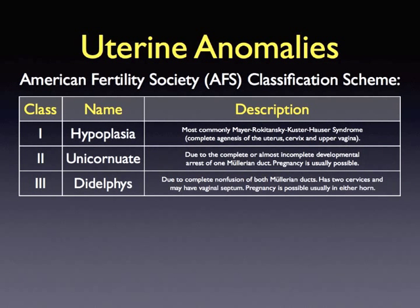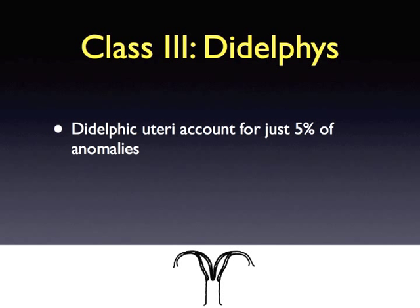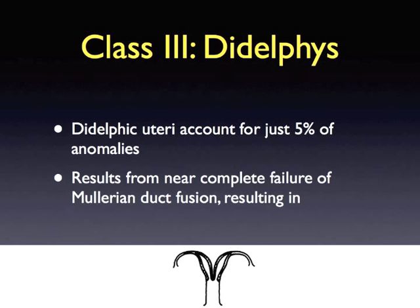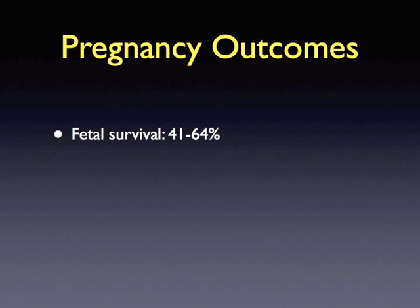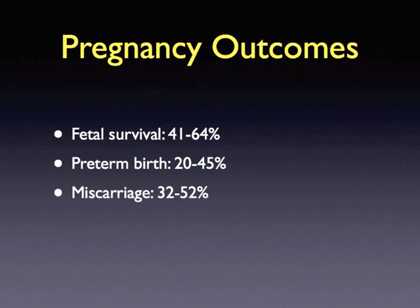Class 3 uterine anomalies are referred to as uterine didelphys. Didelphic uteruses account for only 5% of uterine anomalies and result from near-complete failure of Müllerian duct fusion, resulting in two hemiuteri and two cervices. Uterine didelphys is typically asymptomatic and may be diagnosed at time of initial pelvic exam by the identification of two cervices. Fetal survival occurs in 41–64% of pregnancies, premature birth occurs in 20–45%, and miscarriages occur in 32–52% of women. Cases of twin pregnancies have been reported with one twin in each horn.